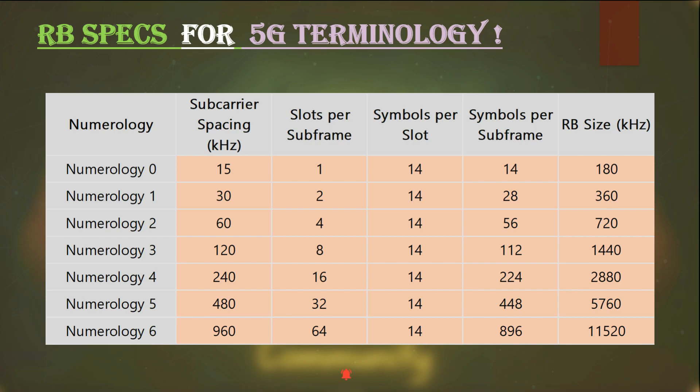For numerology 1, subcarrier spacing is 30 kHz, number of slots per subframe is 2, symbols per slot is 14, and total symbols in the subframe is 28. RB size would be twice of 180, means 360 kHz. Similarly for numerology 2, subcarrier spacing is 60 kHz, number of slots per subframe is 4, symbols per slot again 14, hence total symbols per subframe is 56 and RB size would be 720 kHz.